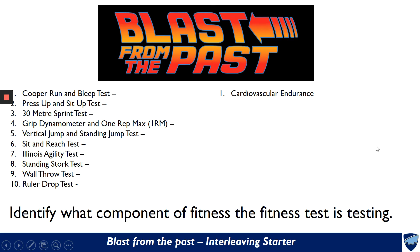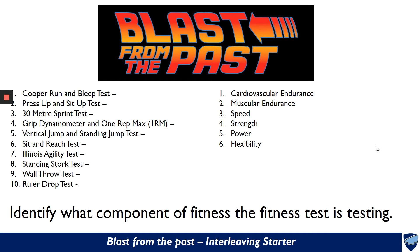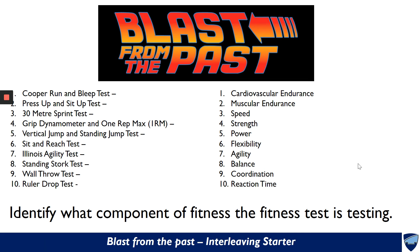Hopefully you had enough time to do that. Number two, the press up test and sit up test, tests muscular endurance. Number three is speed. Number four is strength. Number five is power. Number six is flexibility. Number seven is agility. Number eight is balance. Number nine is coordination and number ten is reaction time. Hopefully you got some of those right from past lessons on components of fitness. If you got any incorrect, just write in the correct answer for future reference.